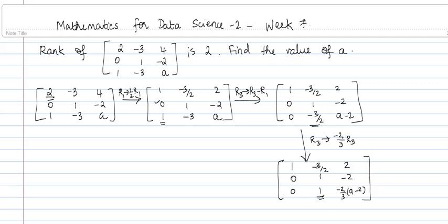To make the leading entry in R2's column for row 3 equal to 0, we subtract R3 from R2. This gives the updated matrix with rows [1, -3/2, 2], [0, 1, -2], and a third row to be determined.